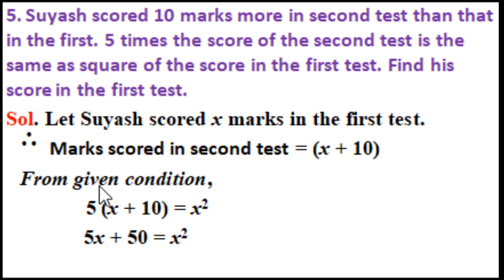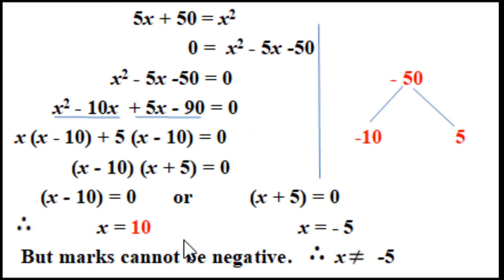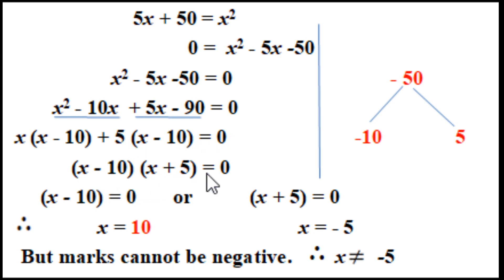From the given condition: five times the score in second test equals the square of the score in first test, so 5(x plus 10) equals x squared. Expanding: 5x plus 50 equals x squared. Rearranging: x squared minus 5x minus 50 equals 0. The factors are minus 10 and 5. So x squared minus 10x plus 5x minus 50 equals 0. Taking common: x(x minus 10) plus 5(x minus 10) equals 0, giving (x minus 10)(x plus 5) equals 0. Therefore x equals 10 or x equals minus 5.